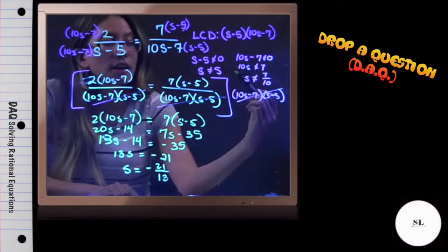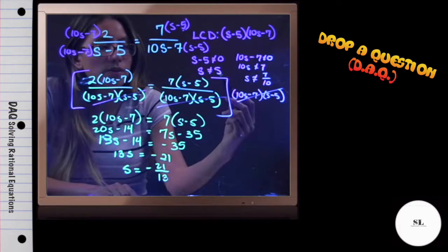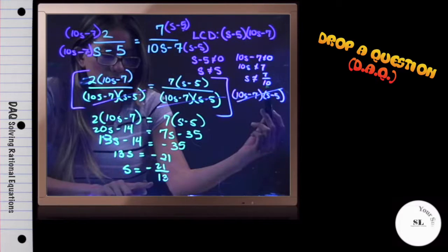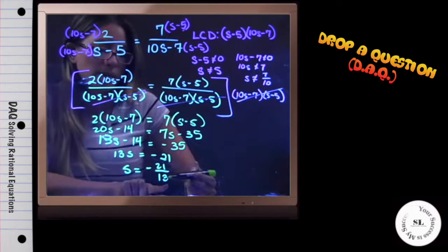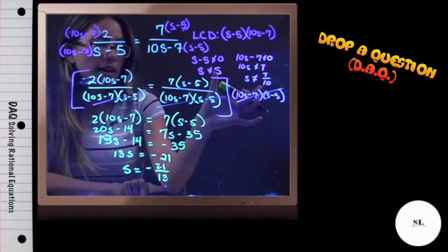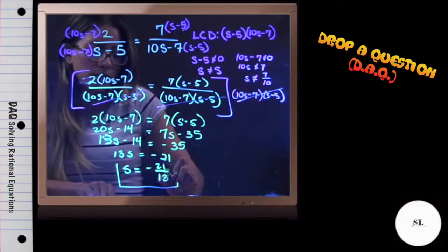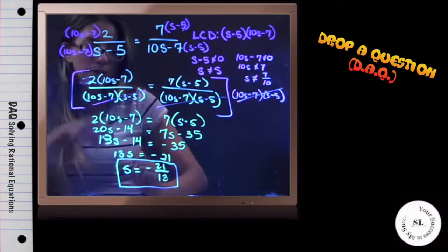If I check my answers, I need to make sure that s is not equal to 5 and not equal to 7 over 10. This is my most simplest answer that I can get, and it does not fall within these. So I know that this is a viable answer.